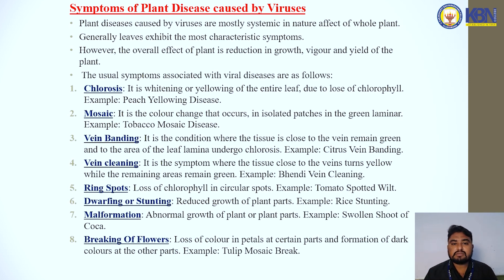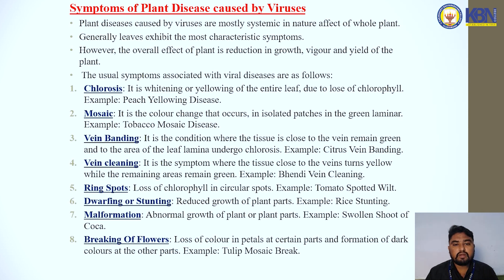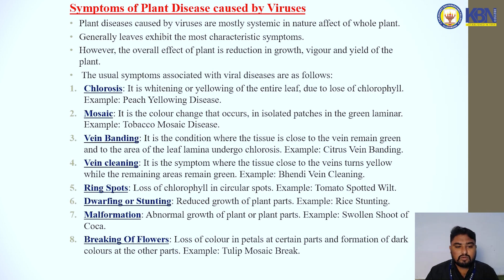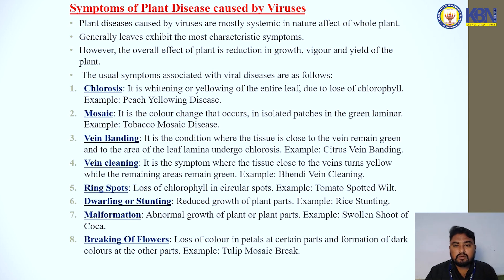The plant diseases caused by viruses are mostly systemic in nature, affecting the whole plant. Generally, new growth exhibits the most characteristic symptoms. The overall effect on the plant causes reduction in growth, weakening, and reduced yield. The usual symptoms associated with viral disease are: chlorosis, mosaic, vein banding, vein clearing, ring spots, dwarfing or stunting, malformation, and browning of flowers.